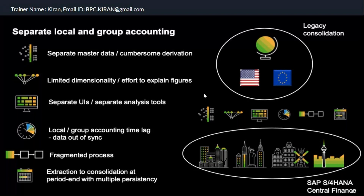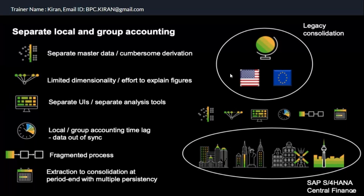Earlier, you had separate local and group accounting with ECC, BW, and BPC systems. In ECC we did financial reporting entity by entity. Very few people used ECC consolidations. When SAP introduced BPC — Business Planning and Consolidation — we did consolidation there. That was the legacy consolidation situation: BPC or BW system, possibly with ETL tools, and a separate local finance system.